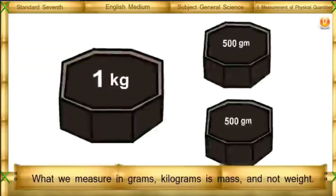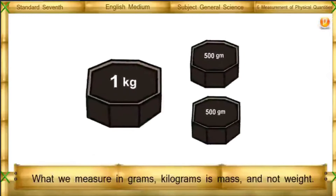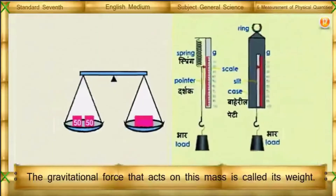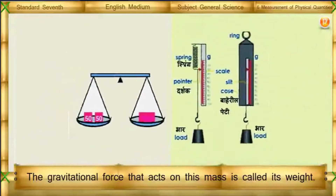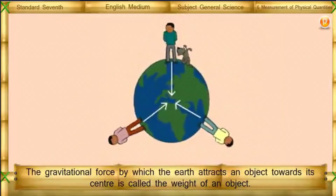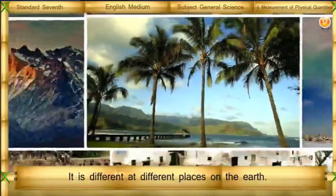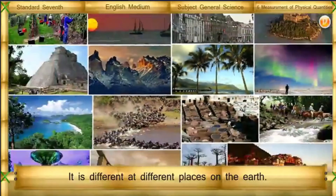What we measure in grams and kilograms is mass, not weight. The gravitational force that acts on a mass is called its weight. The gravitational force by which the earth attracts an object towards its center is called the weight of that object. Therefore, weight is a vector quantity and it is different at different places on the earth.